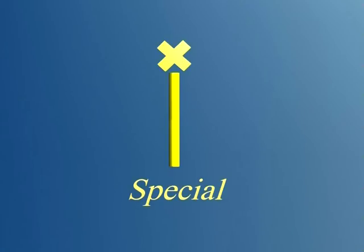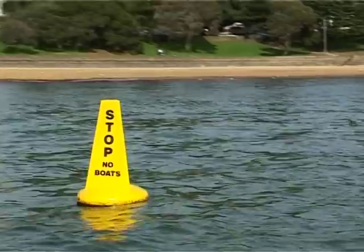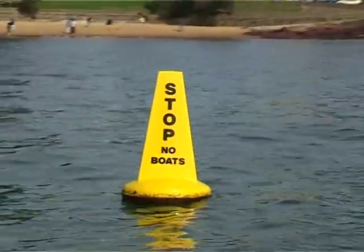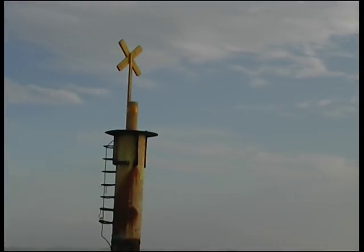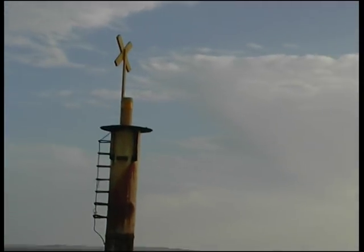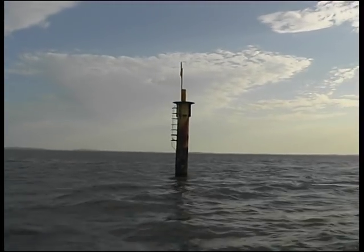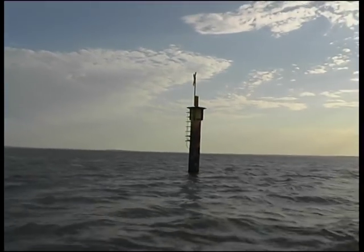Special marks are always yellow. They indicate special features or areas which will be shown on the chart. These could be a spoil ground, a channel for deep draft boats, a recreational area, underwater pipes, or a mooring area buoy as in this case. If lit at night, the special mark light will also be yellow.